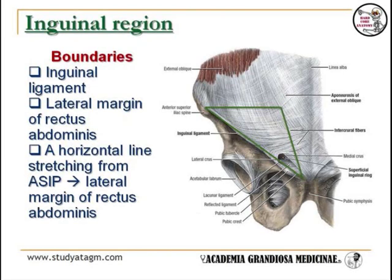The inguinal region is a triangular region bounded by the following: the inguinal ligament, the lateral margin of the rectus abdominis, and a horizontal line stretching from the anterior superior iliac spine to the lateral margin of the rectus abdominis.